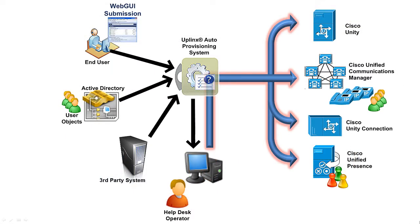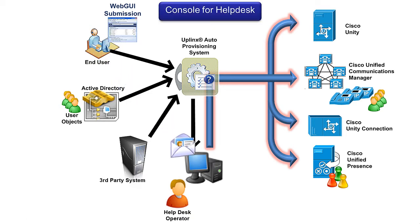The Uplink's provisioning system provides four methods for processing Cisco UC MACDs. Console: Help Desk MACD requests are received via a support tool or email, and these requests are actioned by a phone administrator through the provisioning system.